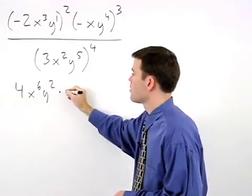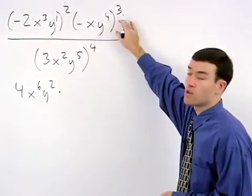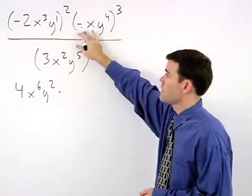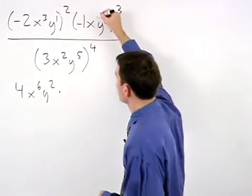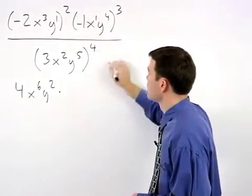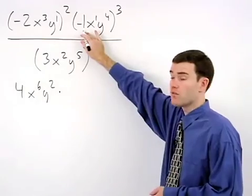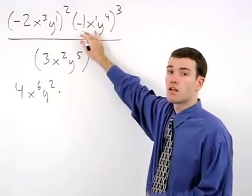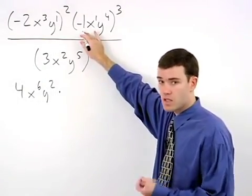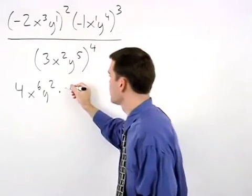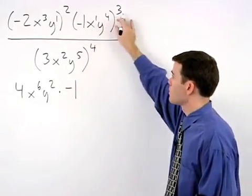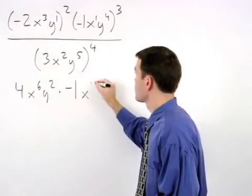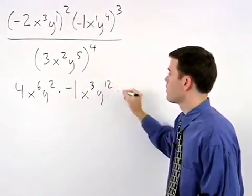This is all multiplied by negative xy to the fourth cubed. Think of the negative as negative 1 and x as x to the first. We cube our coefficient of negative 1, which is negative 1 times negative 1 times negative 1, or negative 1, and multiply each of our exponents by 3 to get x to the third y to the twelfth.